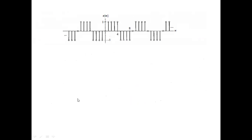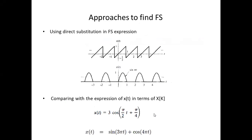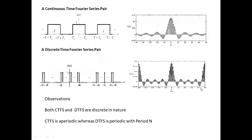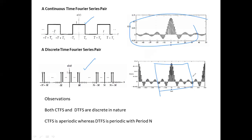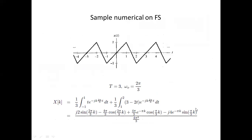So the Fourier series methods we have covered are: Continuous Time Fourier Series (for continuous, periodic signals) and Discrete Time Fourier Series (for discrete, periodic signals). The CTFS coefficients are non-periodic; the DTFS coefficients are periodic and repeat every N samples.